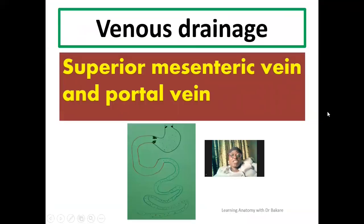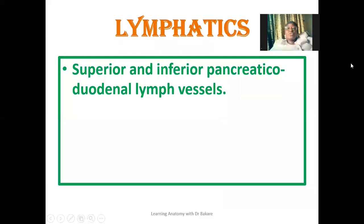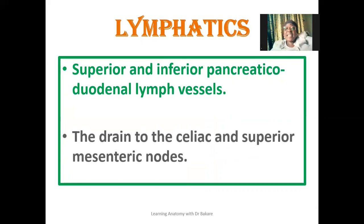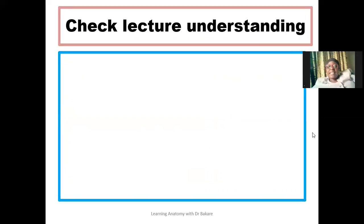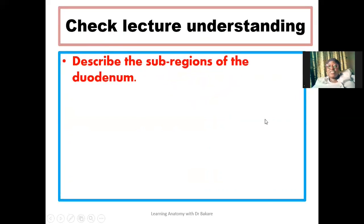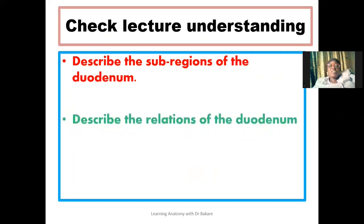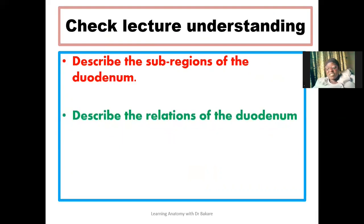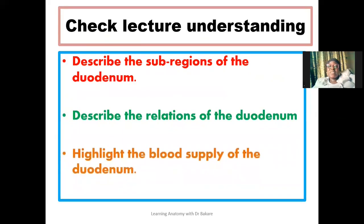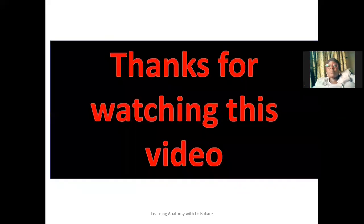The venous drainage of the duodenum is through the superior mesenteric vein and also the portal vein. The lymphatics drain to the superior and inferior pancreaticoduodenal lymph nodes, which further drain into the celiac lymph nodes and also the superior mesenteric lymph nodes. To check our understanding: describe the sub-regions of the duodenum; describe the relations of the duodenum; and highlight the blood supply of the duodenum. Thanks for watching — let's meet again.